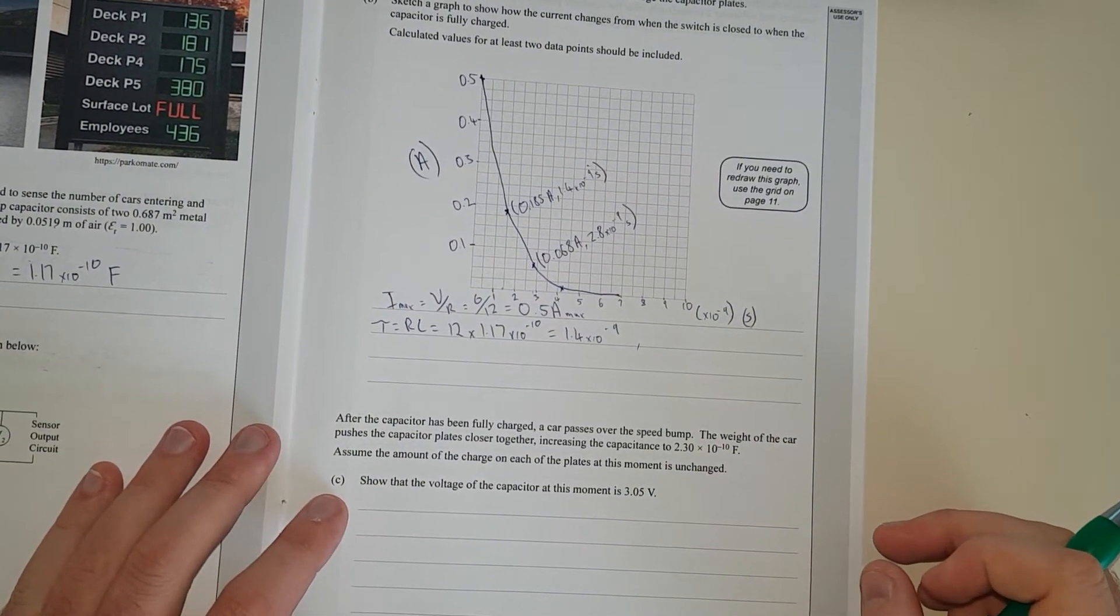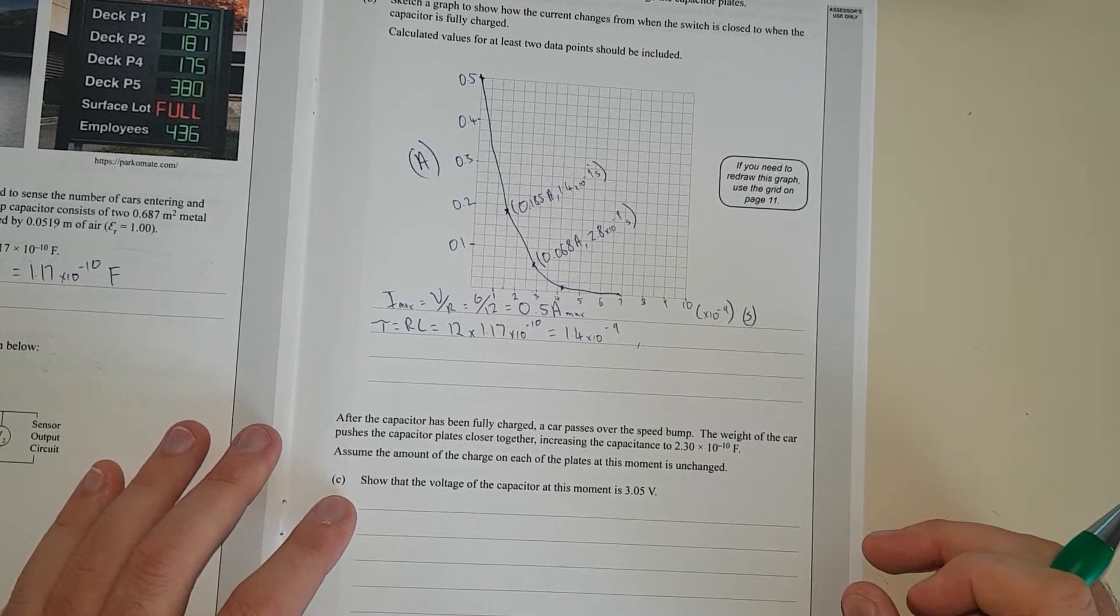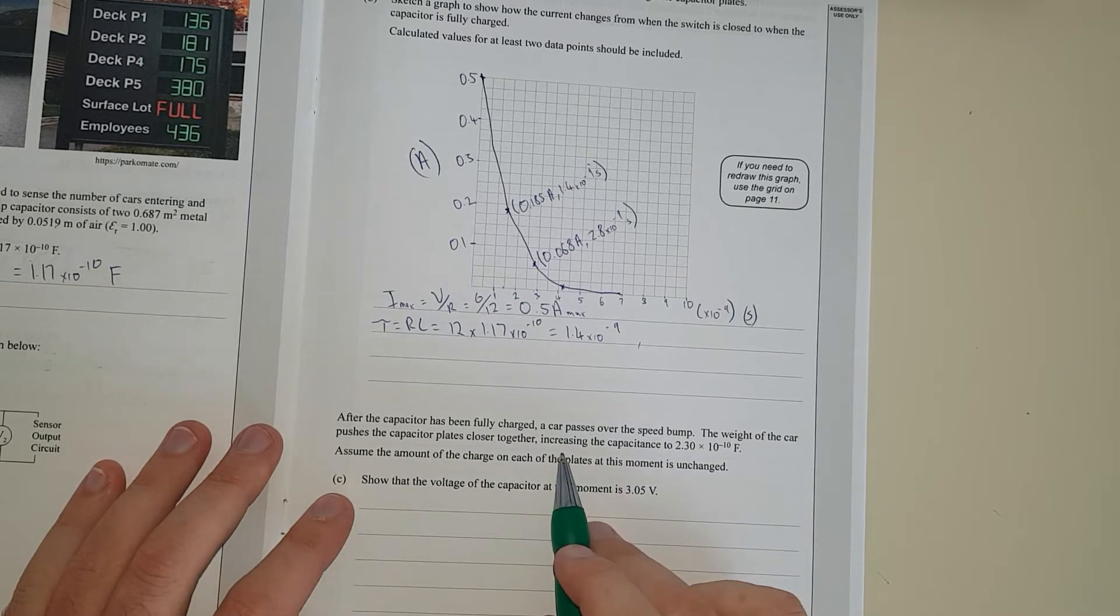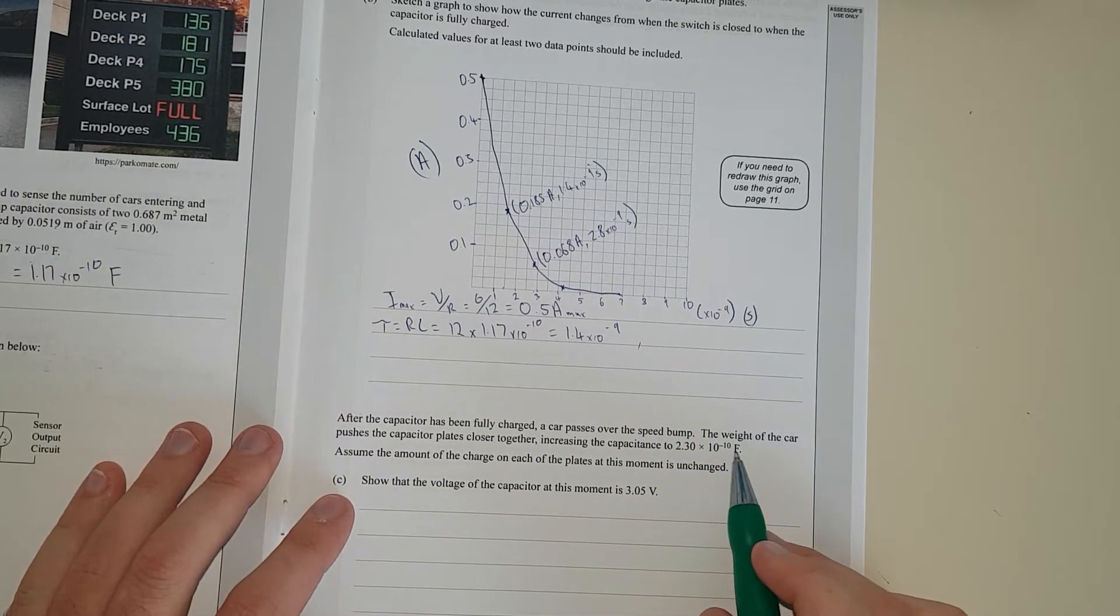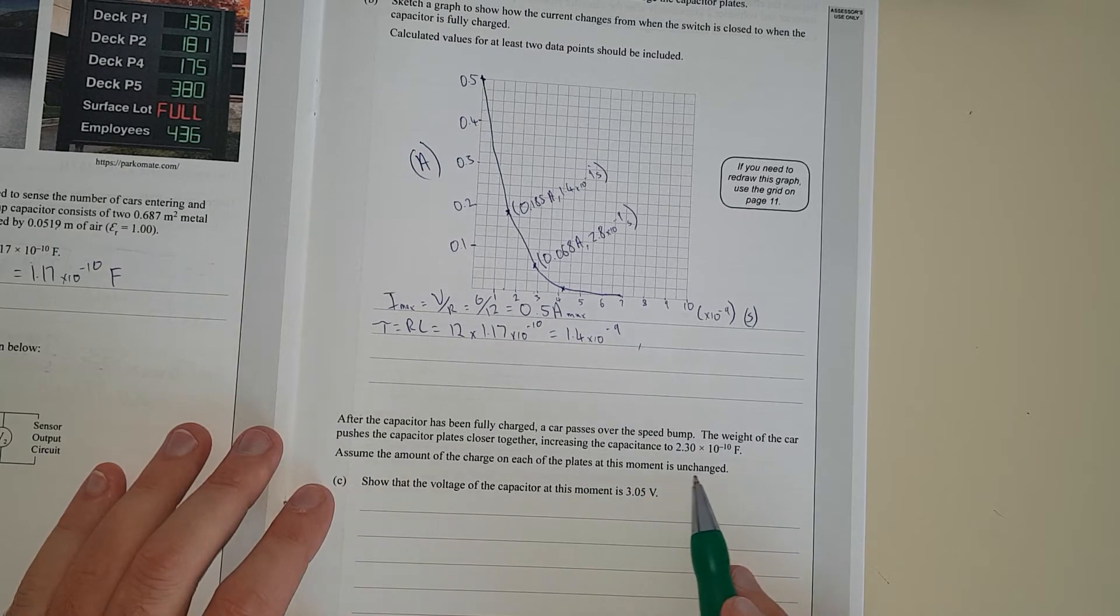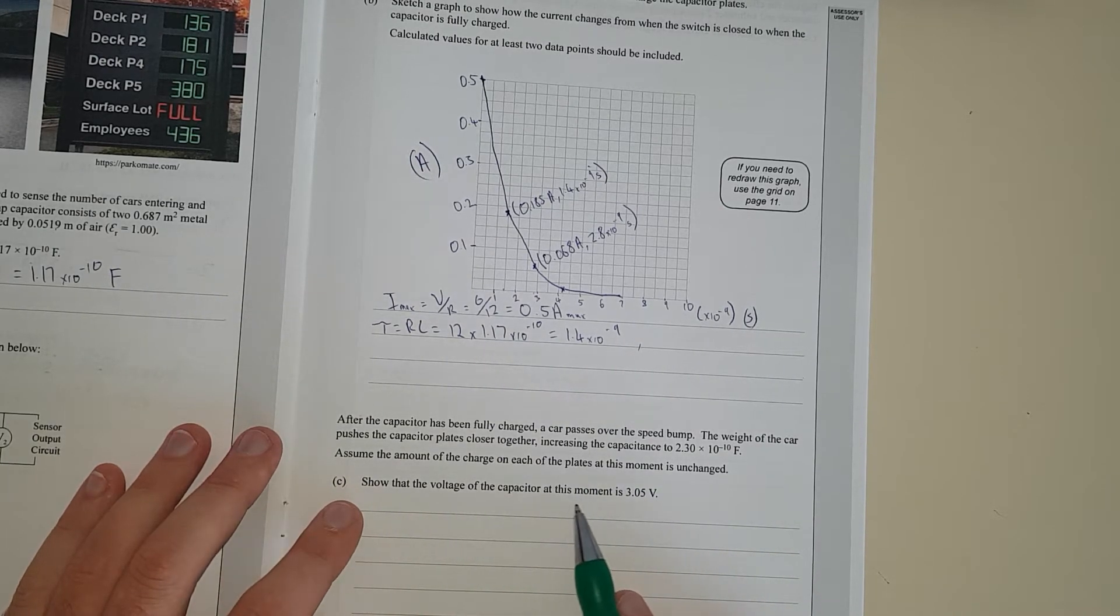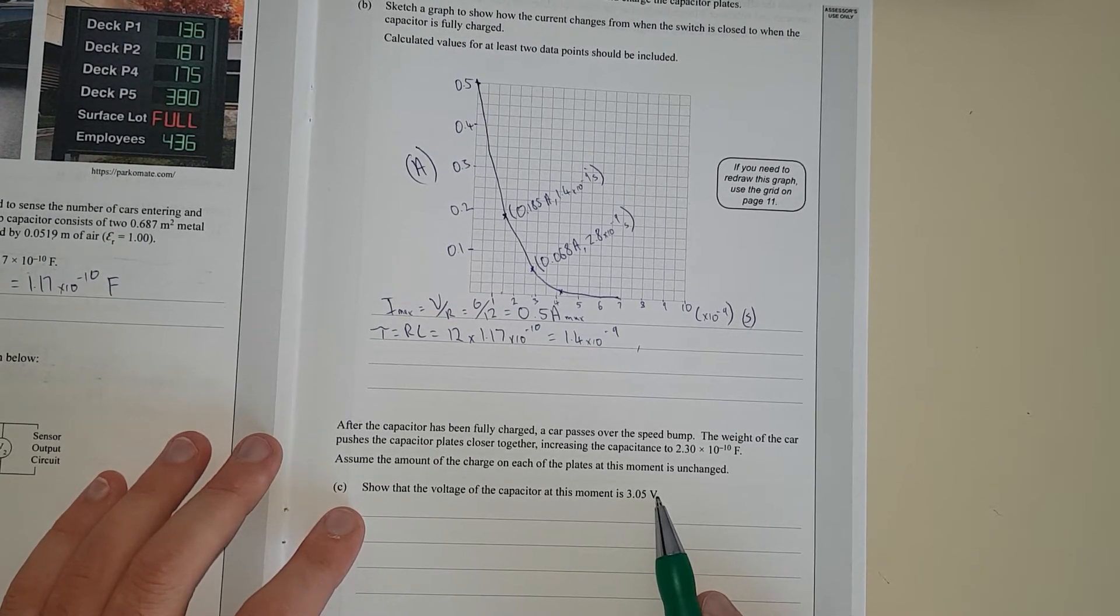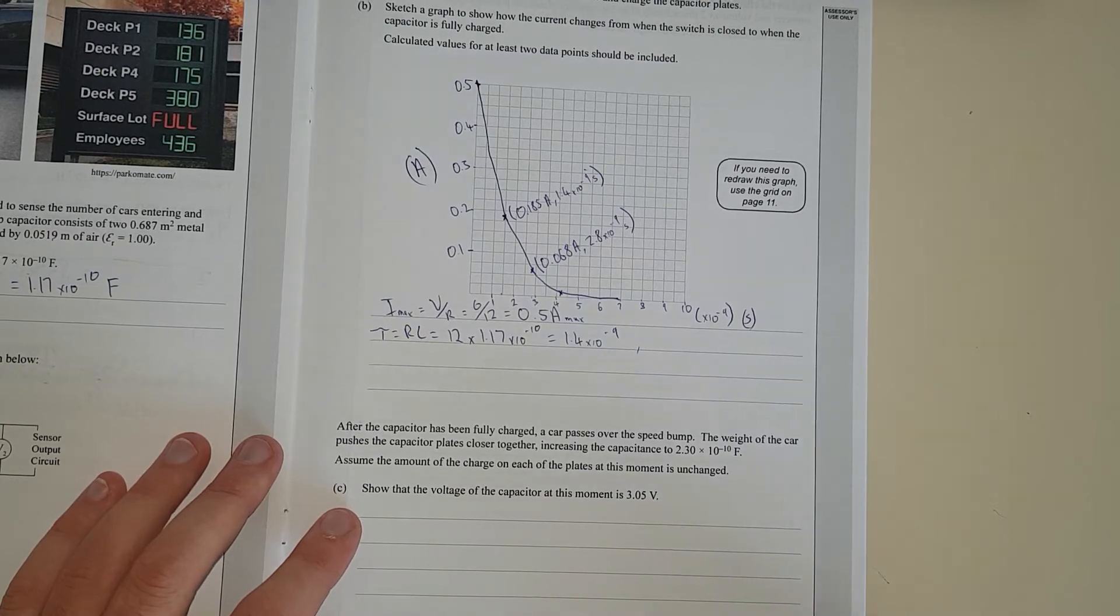So show after the capacitor has been fully charged, the car passes over the speed bump. The weight of the car pushes the capacitor. Increasing the capacitance to 2.3 times 10 to the negative 10 farads. Assume the amount of charge on each plate has remained unchanged. Show the voltage of the capacitor at this moment is 3.05 volts.